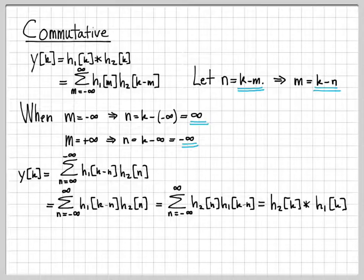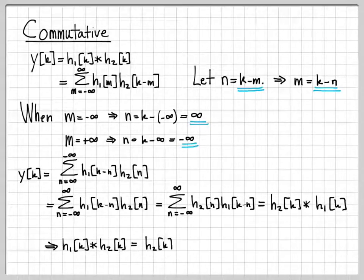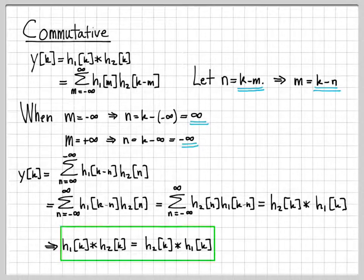What I have right now is actually the quantity h2 convolved with h1. So if we write down the definition of h2 convolved with h1, we have this summation. We've gone through a sequence of steps showing that y of k, which equals our original starting point h1 convolved with h2, is also equal to h2 convolved with h1. So we've shown the commutative property of discrete time convolution.